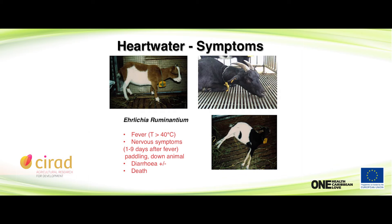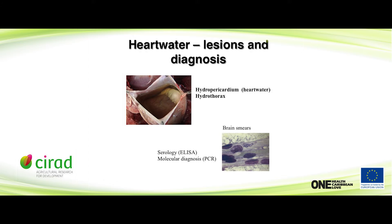The animal dies from the disease. Looking at the post-mortem symptoms — this is quite characteristic. You can see the hydropericardium, which is why we give the name heartwater — a huge accumulation of liquid in the pericardium. In a brain section, you have replication of the bacteria in the brain. You can see the vascular vessel, the endothelial cells, and the accumulation of bacteria in these cells.